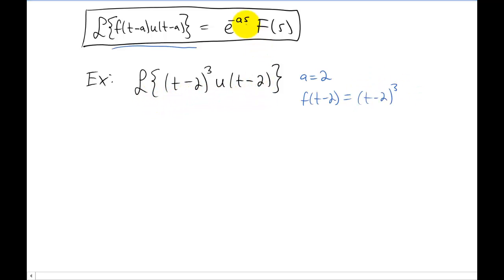Now the answer to this Laplace transform is just going to be this right hand side right here. We know e to the negative a s is just going to be e to the negative 2 s for our problem. But we need capital F of s. Capital F of s represents the Laplace transform of little f of t. So what we need before we can get capital F of s is little f of t. We have little f of t minus 2. And I think it's pretty clear that we can replace t minus 2 in this function with just a t and get little f of t is t cubed.